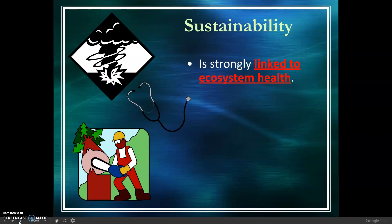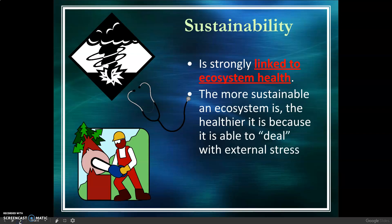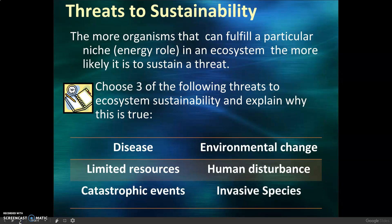Sustainability relates to ecosystem health — the more sustainable an ecosystem is, the healthier it is, because it is able to deal with external stress. There are specific threats to sustainability. The more organisms that can fulfill a particular niche or energy role in an ecosystem, the more likely it is to sustain a threat. Choose three of the following threats to ecosystem sustainability and explain why this is true: disease, limited resources, catastrophic events, environmental change, human disturbance, and invasive species.